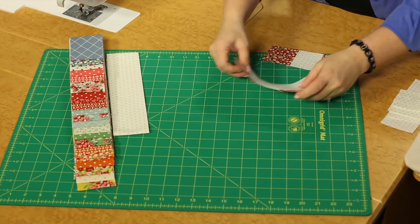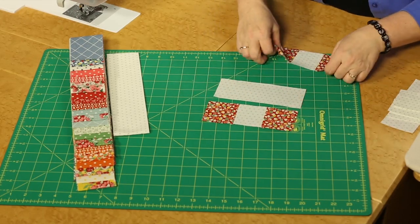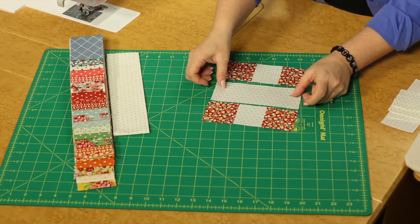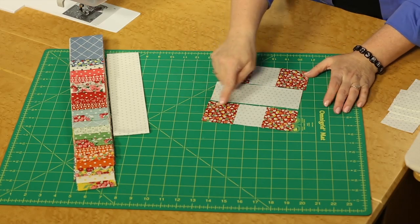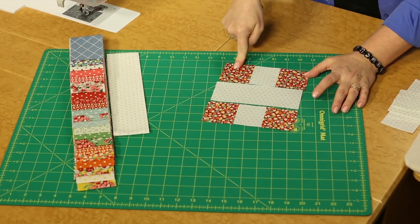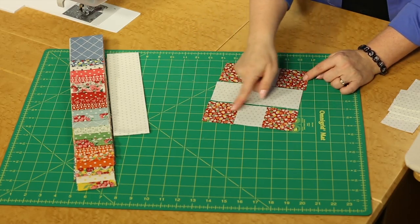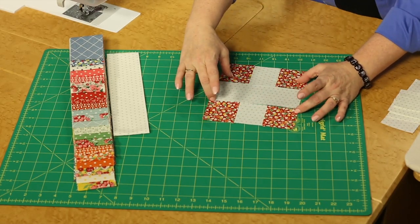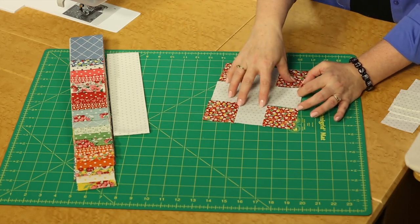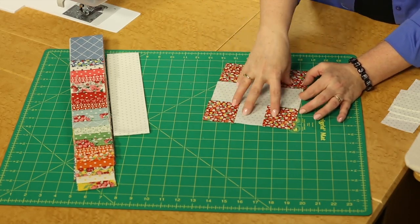You're going to be using the very center is where we're going to begin. We're going to use those 4 print squares, 2 light squares and a light rectangle. You're going to join these into a row and then you're going to join this section together. So you've created this center, kind of a plus shape in the center of our block.